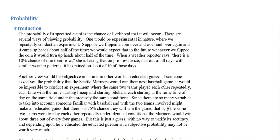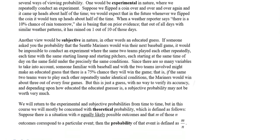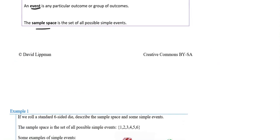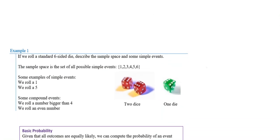That's worth reading through, but let's move on to some of the basic concepts in probability. We've got some key terms: the result of an experiment is called an outcome. An event is any particular outcome or group of outcomes. A sample space is the set of all possible simple events. That'll make more sense with some examples.